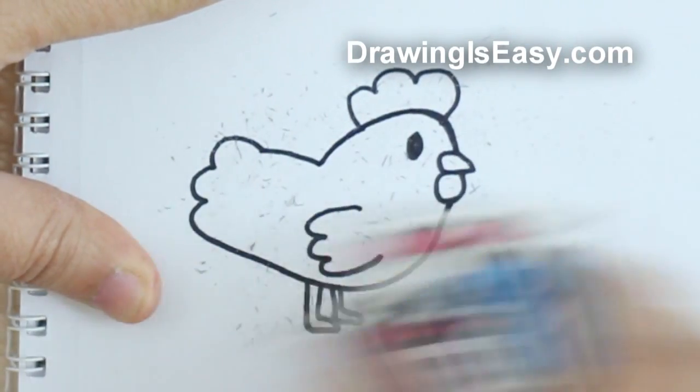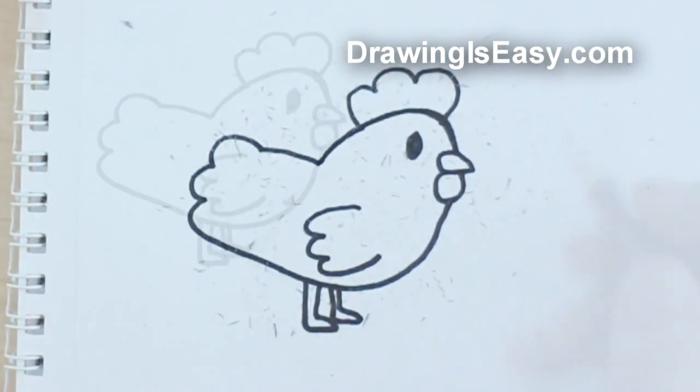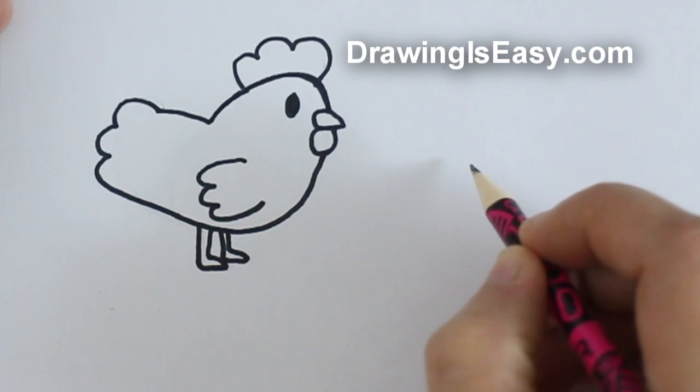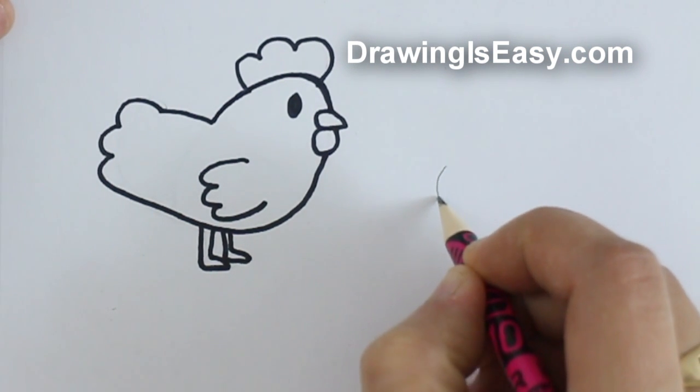Aside from making the chicken, I'm going to make a chick. I'm going to start by making a circle.